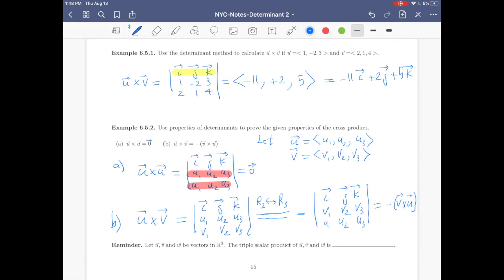Okay now reminder: Let u, v, and w be vectors in R3. Then the triple scalar product of u, v, and w is, if you remember from chapter one, this was u dot (v cross w). That's what we call triple scalar product.